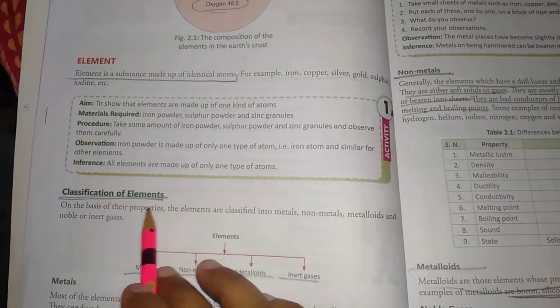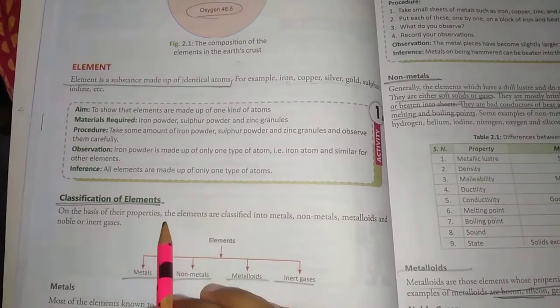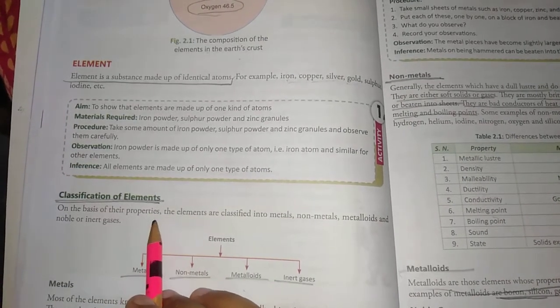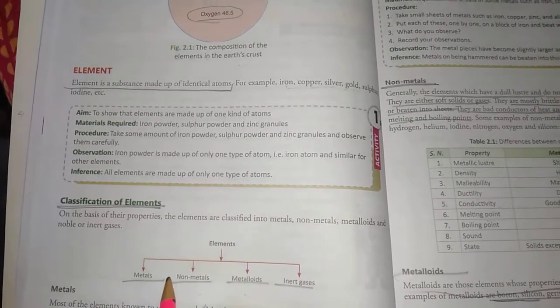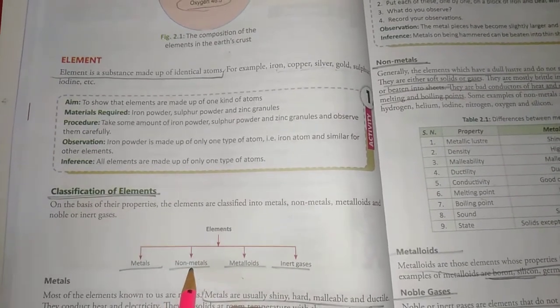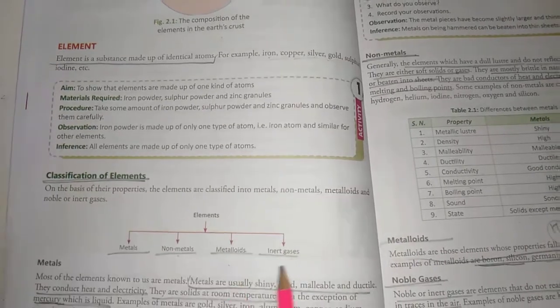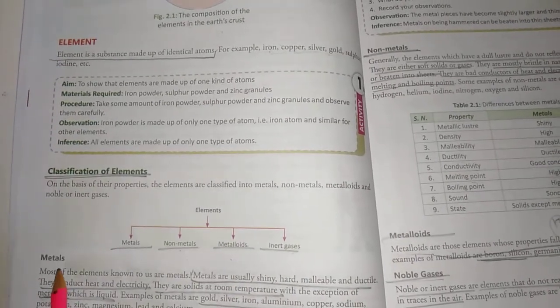Now we will discuss the classification of elements. The elements are divided by their properties into four parts: the first is metals, the second is non-metals, the third is metalloids, and the fourth is noble gases.